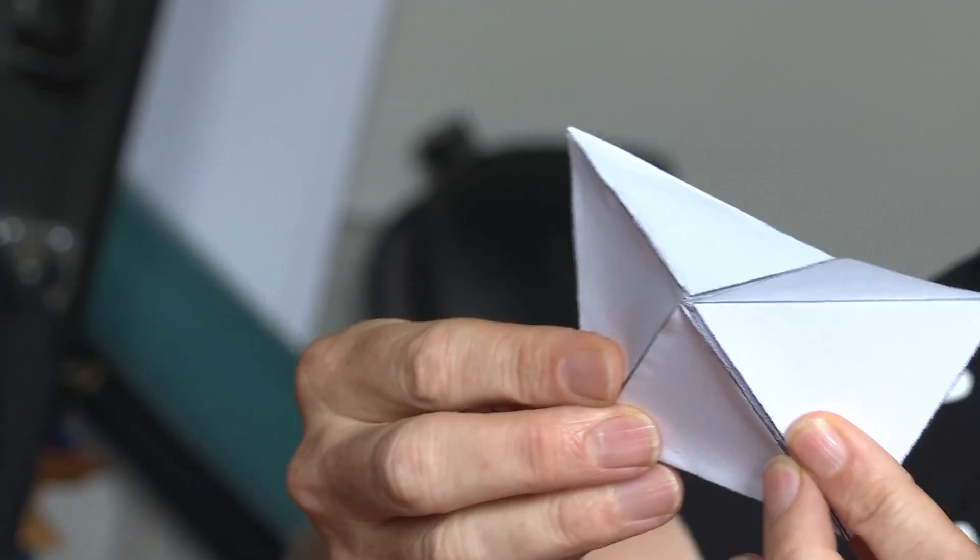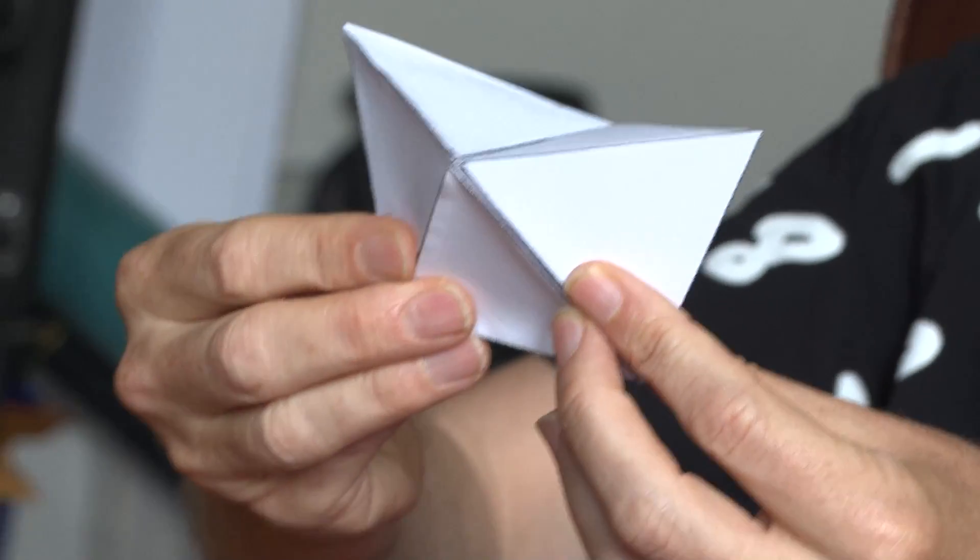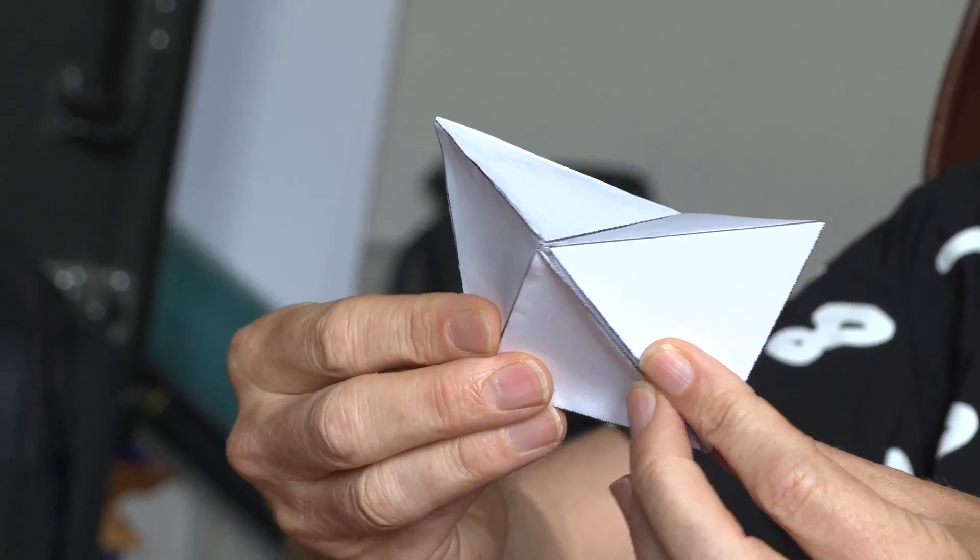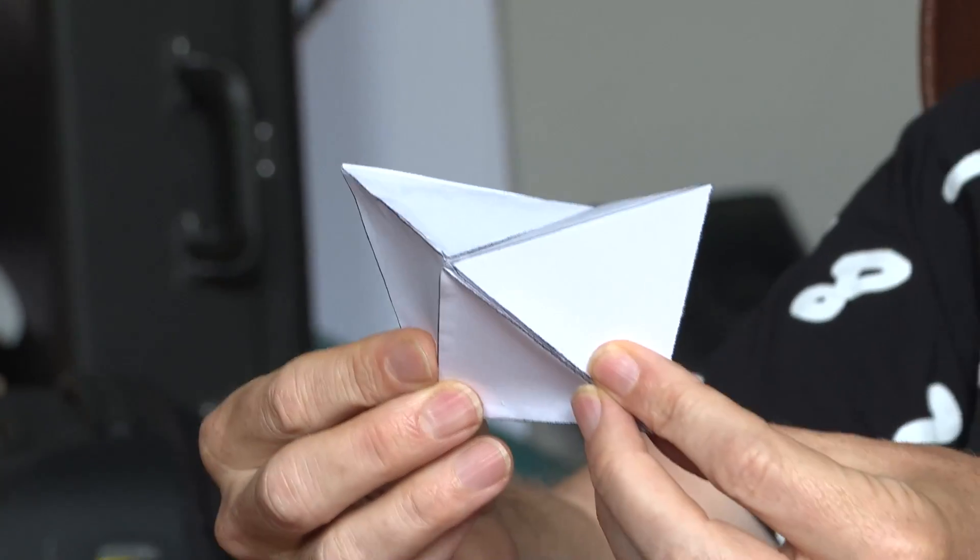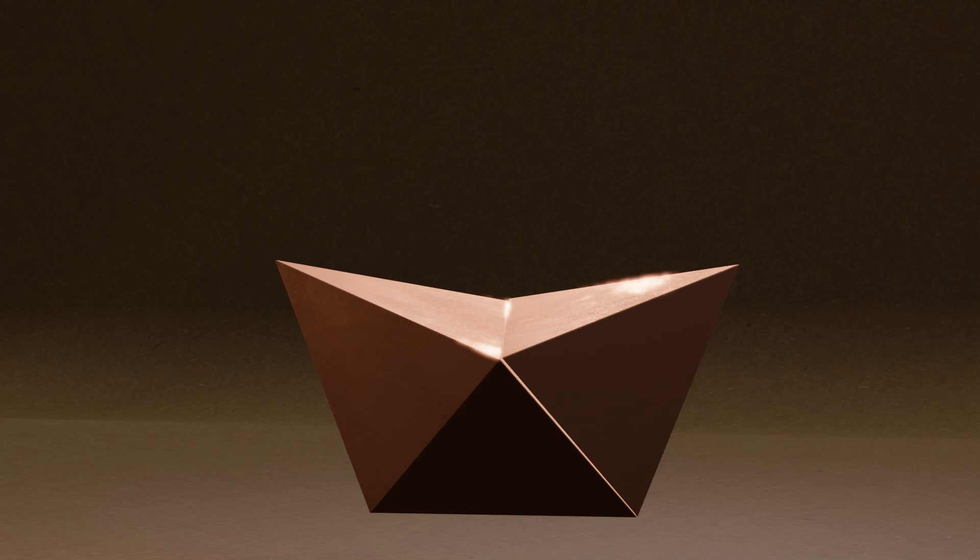Perhaps people in the comments down below, either we can christen it, give it a name, or maybe somebody does know a name for that. Perhaps it could be called the Shawcross shape or something. It is a little bit boaty.